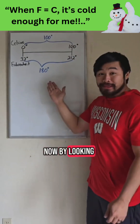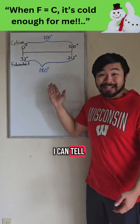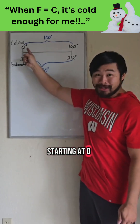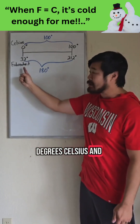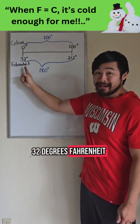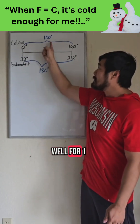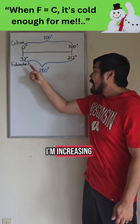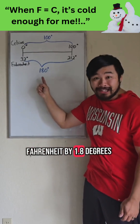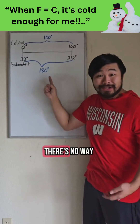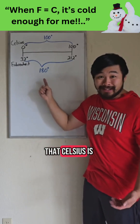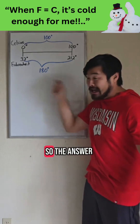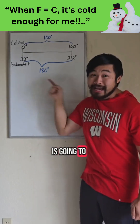By looking at this, I can tell that the answer is going to be negative, because if I'm starting at 0 degrees Celsius and 32 degrees Fahrenheit, for every 1 degree Celsius that I'm increasing, I'm increasing in Fahrenheit by 1.8 degrees. There's no way that Celsius is going to catch up to Fahrenheit, so the answer is going to be negative.